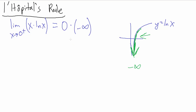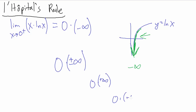That's one of our seven indeterminate forms discussed in an earlier video. We said 0 times infinity, but that includes positive and negative infinity — 0 times positive infinity and 0 times negative infinity are both indeterminate forms for the same reasons. We can group them as the generic indeterminate form 0 times infinity. So we have an indeterminate form — which actually makes us happy, because that tells us we can use L'Hôpital's rule.